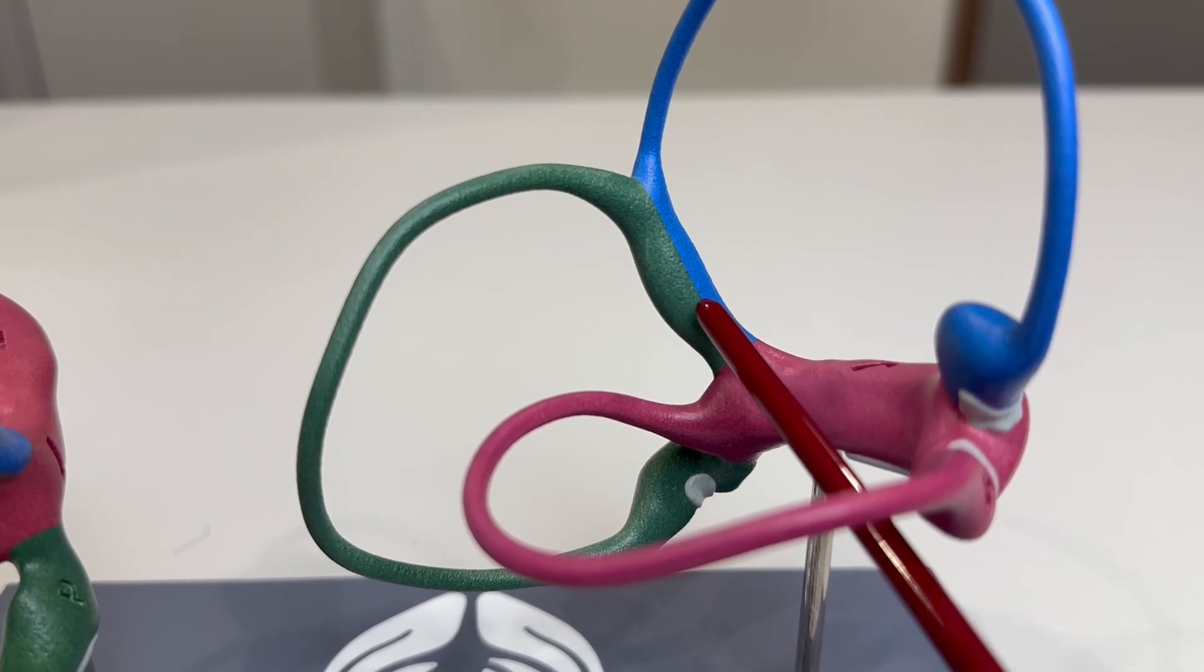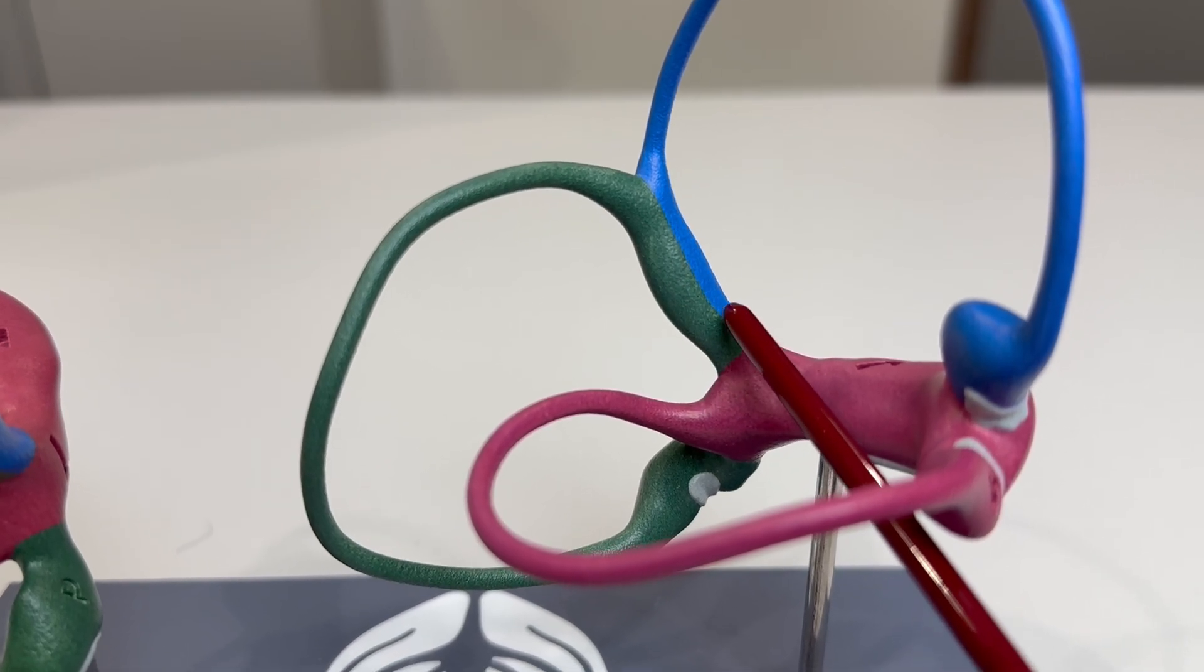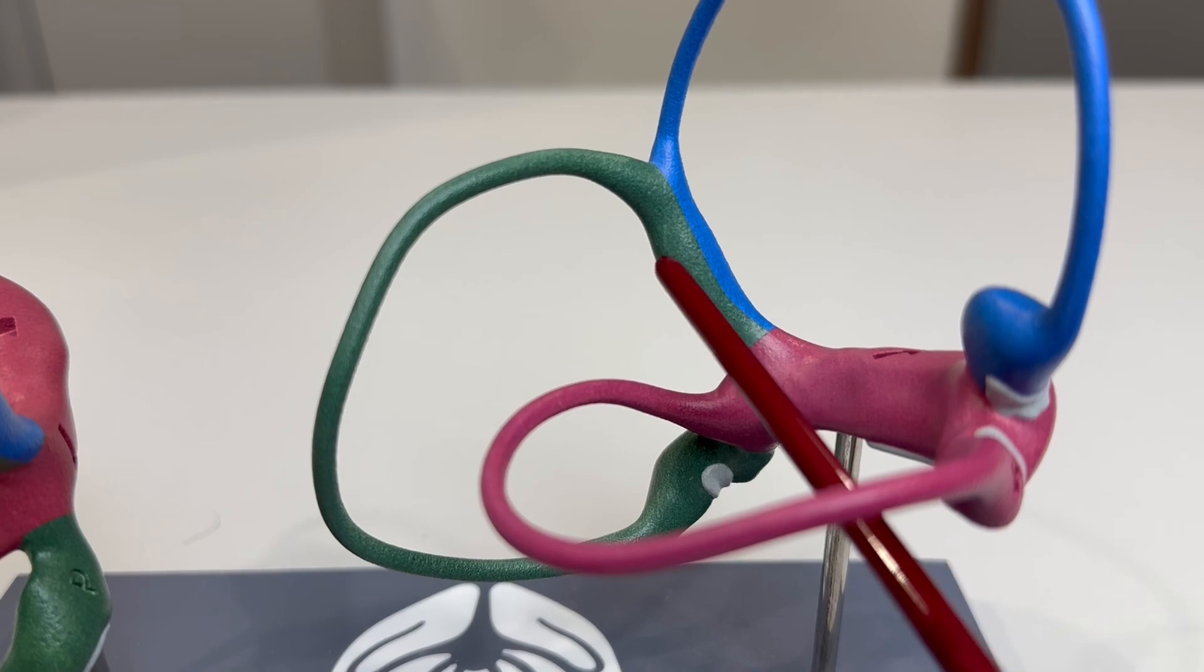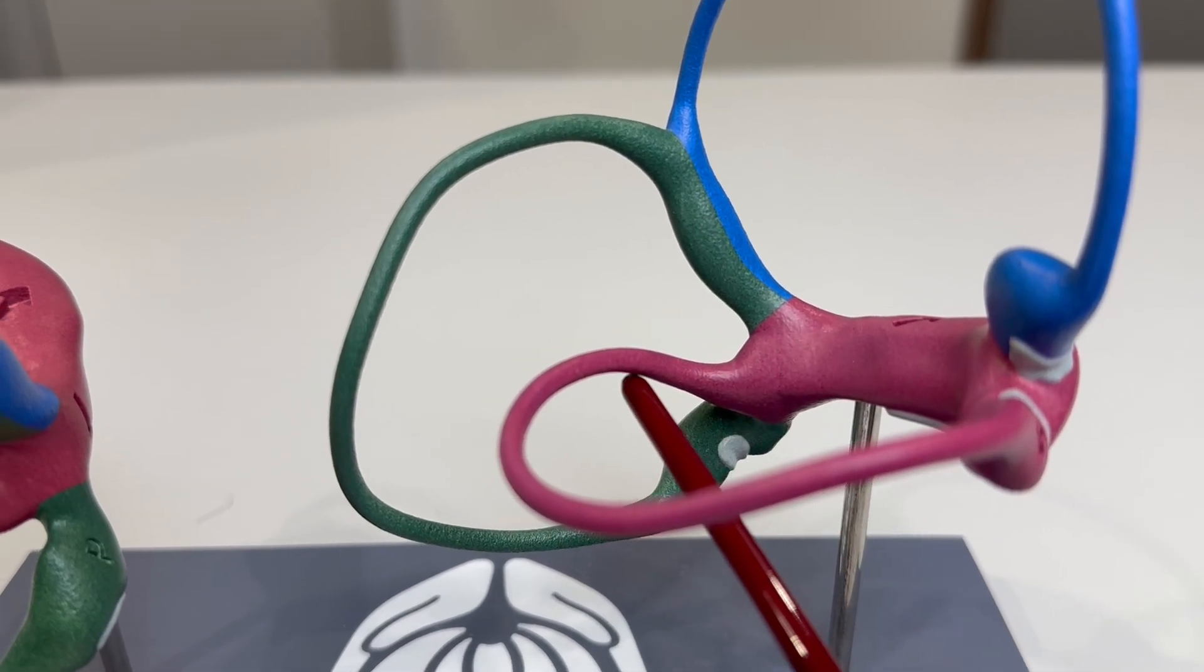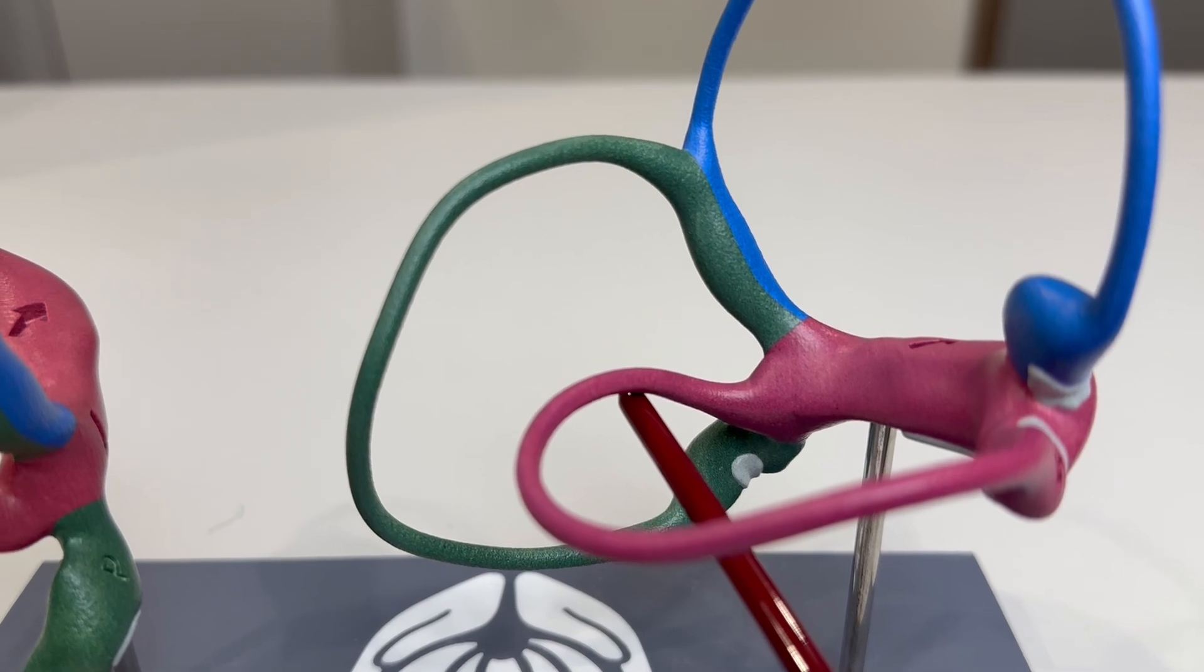Notice how the non-ampullary end of the horizontal canal lies very close to that of the posterior canal at the crux commune, and this proximity explains why otoliths can easily move from the posterior to the horizontal canal after certain maneuvers.